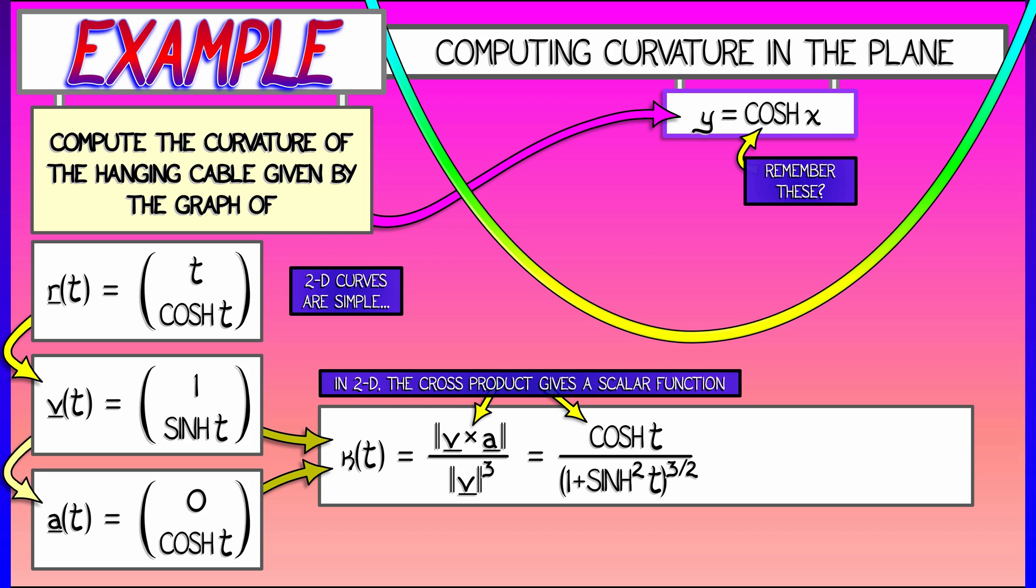You may recall the hyperbolic trig identity that says that 1 plus sinh squared equals cosh squared. That means we can replace that denominator by cosh cubed, and now I have a cancellation between the hyperbolic cosine in the numerator and the 3 hyperbolic cosines in the denominator. That leaves me with 1 over cosh squared, which is, I don't even know how to pronounce that. That's a hyperbolic secant squared.